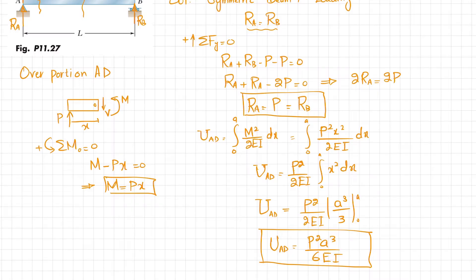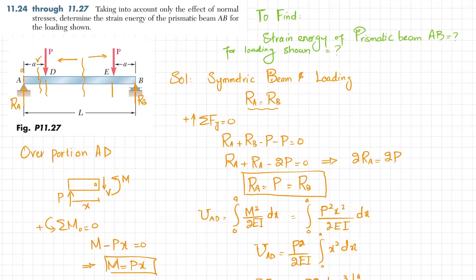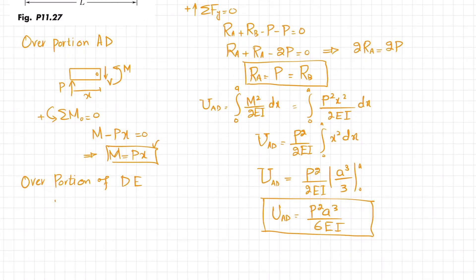Now for portion DE. The moment at point D is found by substituting X equals A into M equals PX, giving moment equal to PA. From D to E the moment remains constant, so M equals PA throughout this portion.